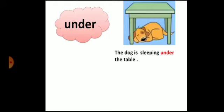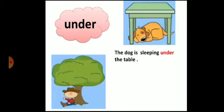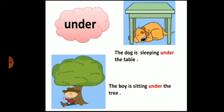Now we will see the next preposition: 'under'. Can you see a dog? Where is he sleeping? The dog is sleeping under the table. So 'under' is a preposition. Now, can you see where the boy is sitting? The boy is sitting under the tree. Here, 'under' is a preposition.